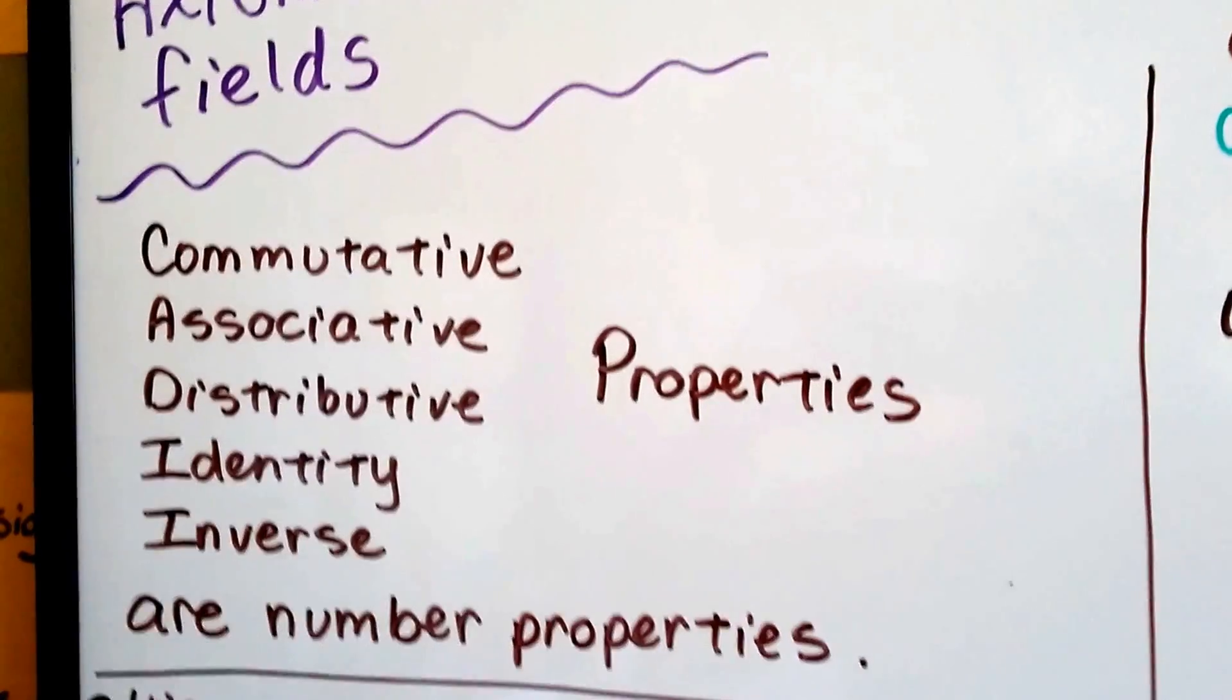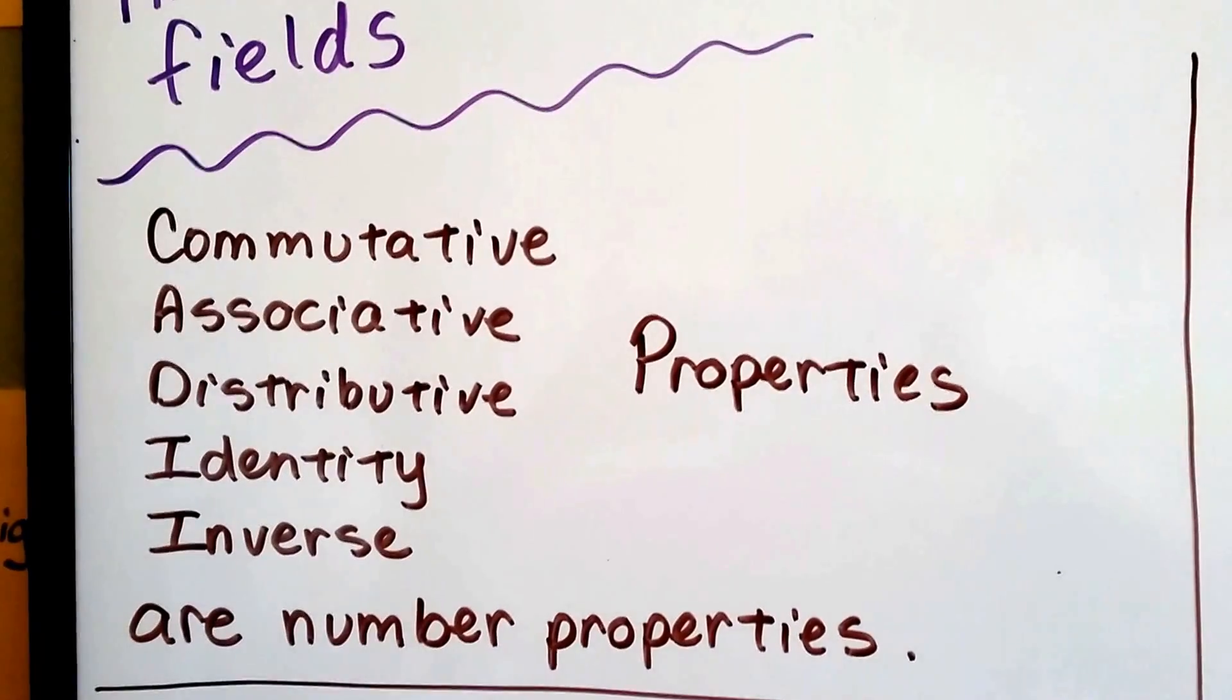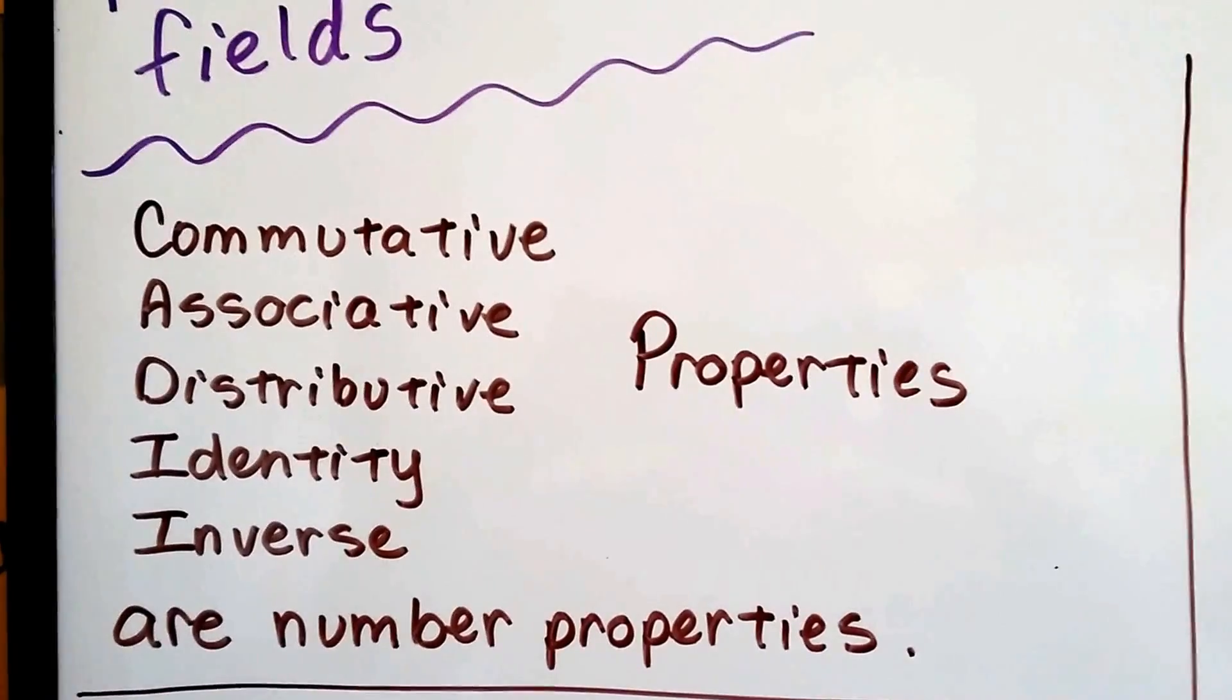Commutative, associative, distributive, identity, inverse, all these properties, they're all number properties.